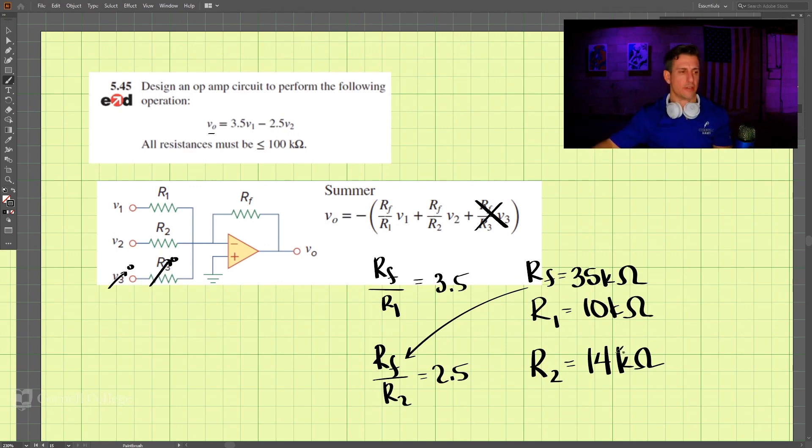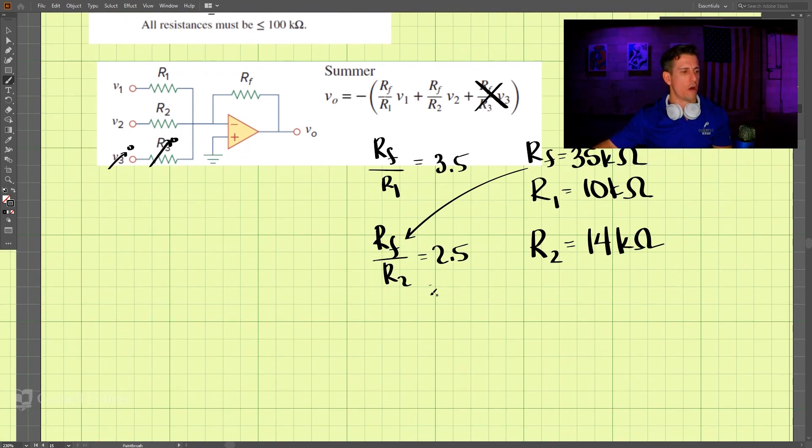So let's draw that quick. Here we have our first resistor and then we have a second resistor, and both of those come into the op-amp. Draw the op-amp.